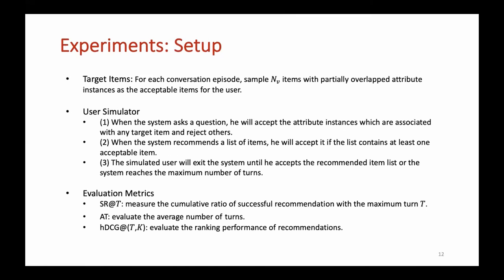For the target items of one conversation, we sample NV items with potentially overlapped attribute instances as acceptable items for the user. Given a conversation, the simulated user's feedback of each turn follows the rules. When the system asks a question, he will accept the attribute instances which are associated with any target item and reject others. When the system recommends a list of items, he will accept it if the list contains at least one acceptable item. The simulated user will exit the system until he accepts the recommended item list or the system reaches the maximum number of turns. In addition, we use SR@K and NDCG@K as evaluation metrics.